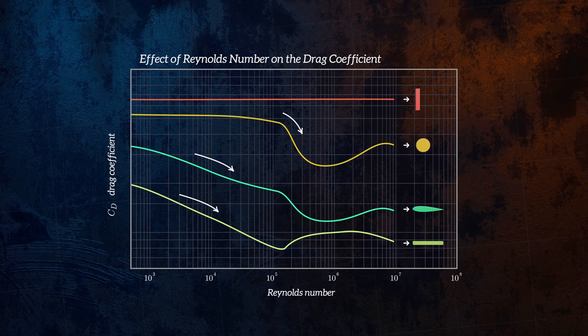But the drag coefficient begins to increase after the transition to turbulent flow, because, as we saw earlier, a turbulent boundary layer produces larger shear stresses.